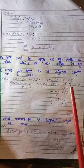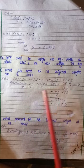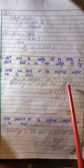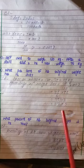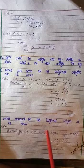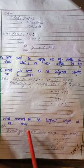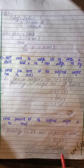Percentage of weight loss: 45 divided by 120, multiply by 100, equals 37.5%. What percent of his original weight is he now? Percentage of new weight: 75 by 120, multiply by 100. The answer is 62.5%.